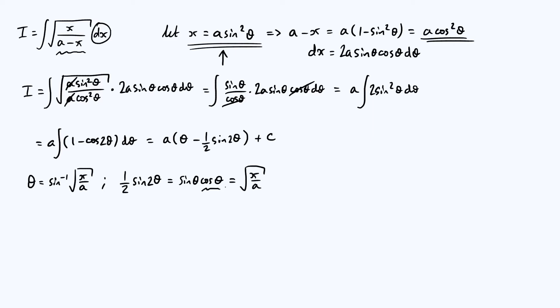And then with this cos theta term, we can use the fact that cos squared plus sine squared is 1. And therefore, cos theta is the square root of 1 minus sine squared theta. So we get the square root of 1 minus x over a. And this x over a, again, just followed from our definition up there. Sine squared theta is x over a.